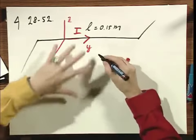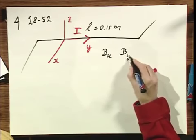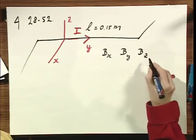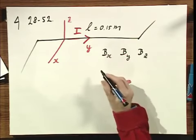There is a B field in space, and you're being given what Bx is, what By is, and you're being given what Bz is. And you're being asked what is the force on the wire.